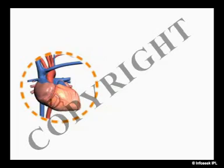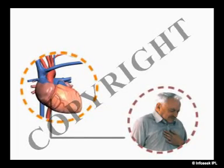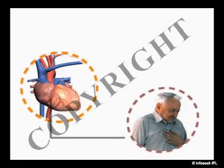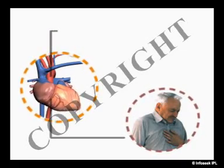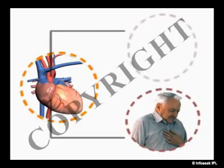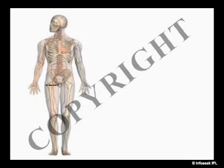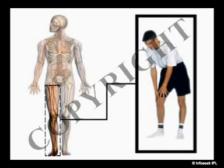Atherosclerosis of the coronary arteries in the heart leads to ischemic heart disease characterized by chest pain on exertion. Atherosclerosis of the aorta causes poor blood supply to the intestine and limbs. Poor circulation to the legs can lead to pain while walking or exercising, deficient wound healing and leg ulcers.